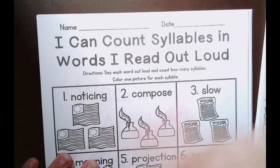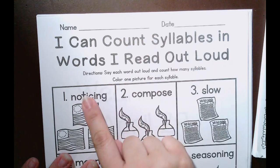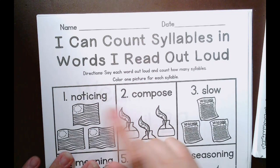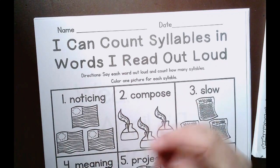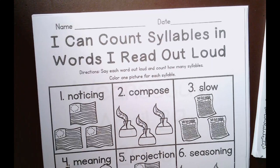So there's two parts, right? We need to read the word, or actually three parts. We need to read the word, count the syllables by clapping them out if you need to, and then you're going to color one picture for each syllable, okay?